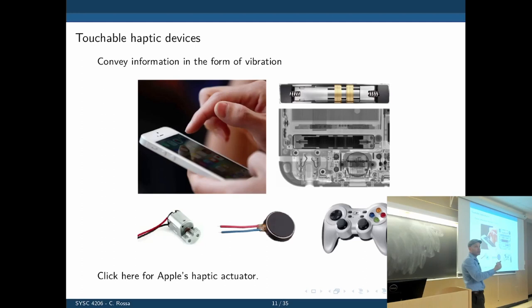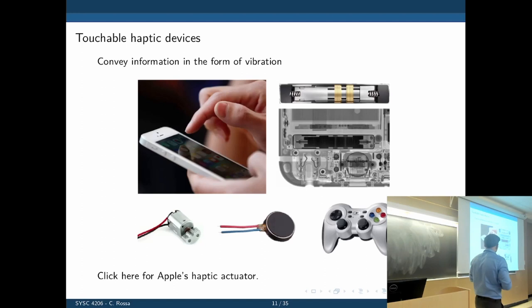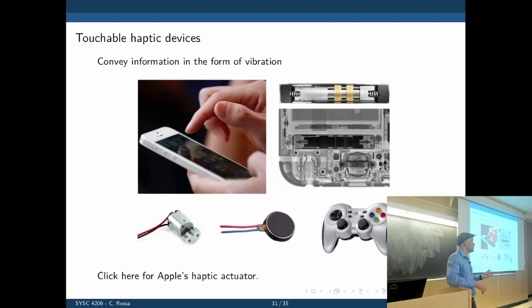The first category is touchable haptic devices. For example, in a cell phone when you type, you get some sort of feedback to confirm your action — that's quite handy. Once you have it, it's hard to go back. This is the engine used in iPhones. There is a mass that vibrates and resonates at a frequency. Once you have it, it's hard to imagine doing the same thing without that little vibration.